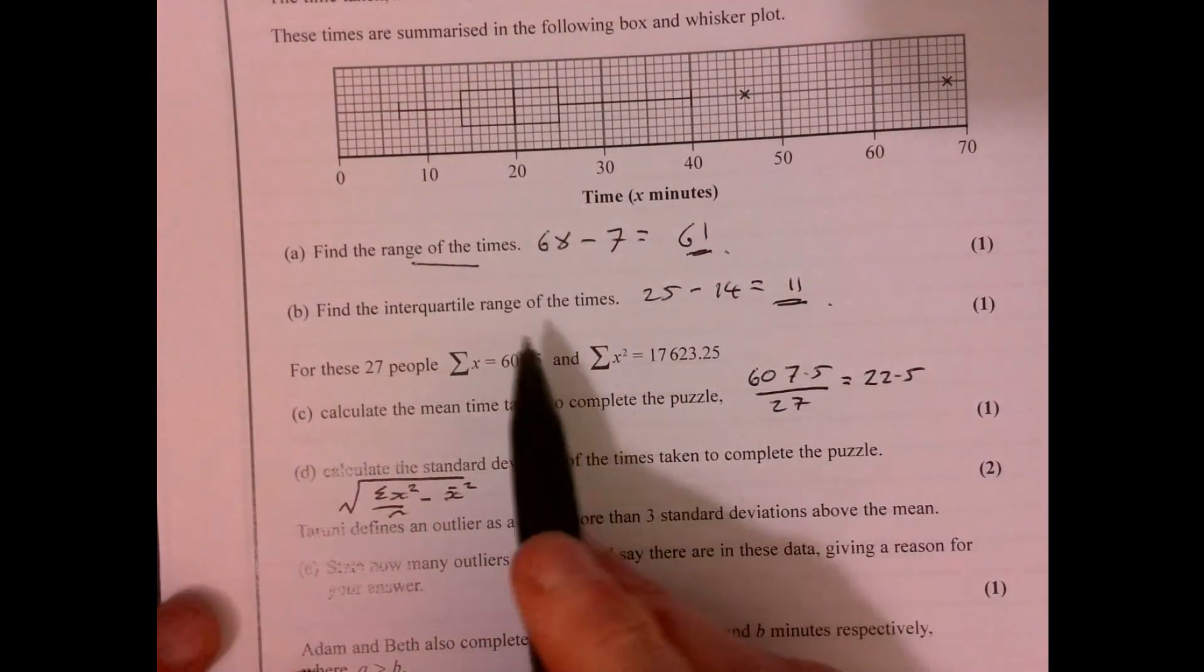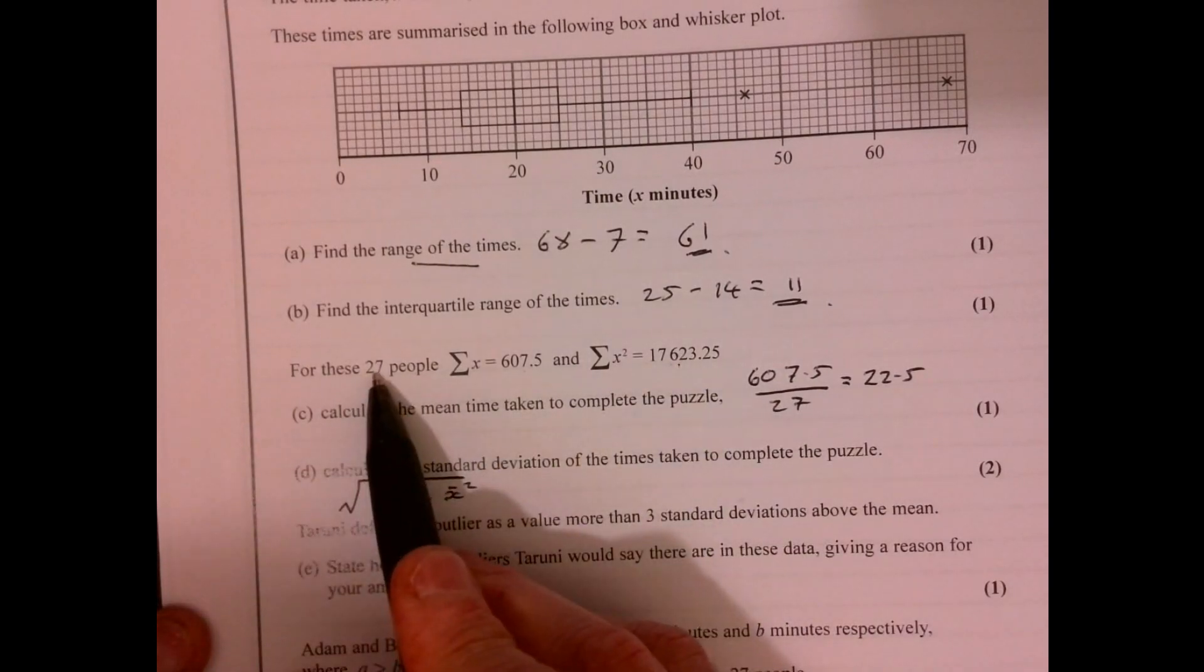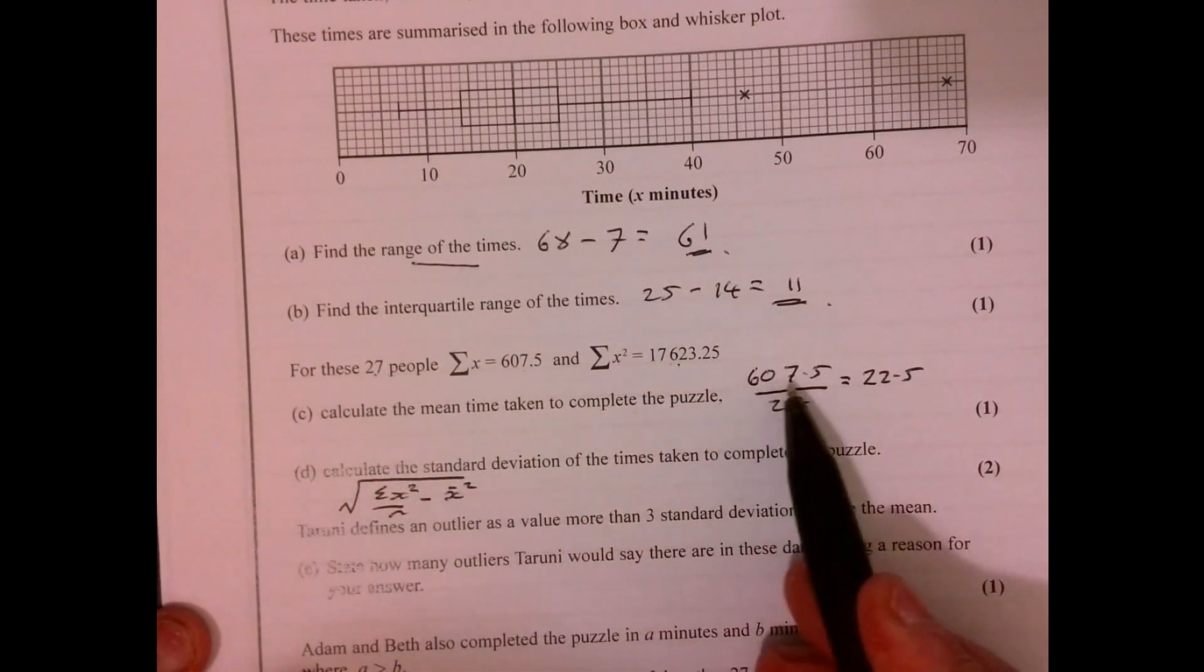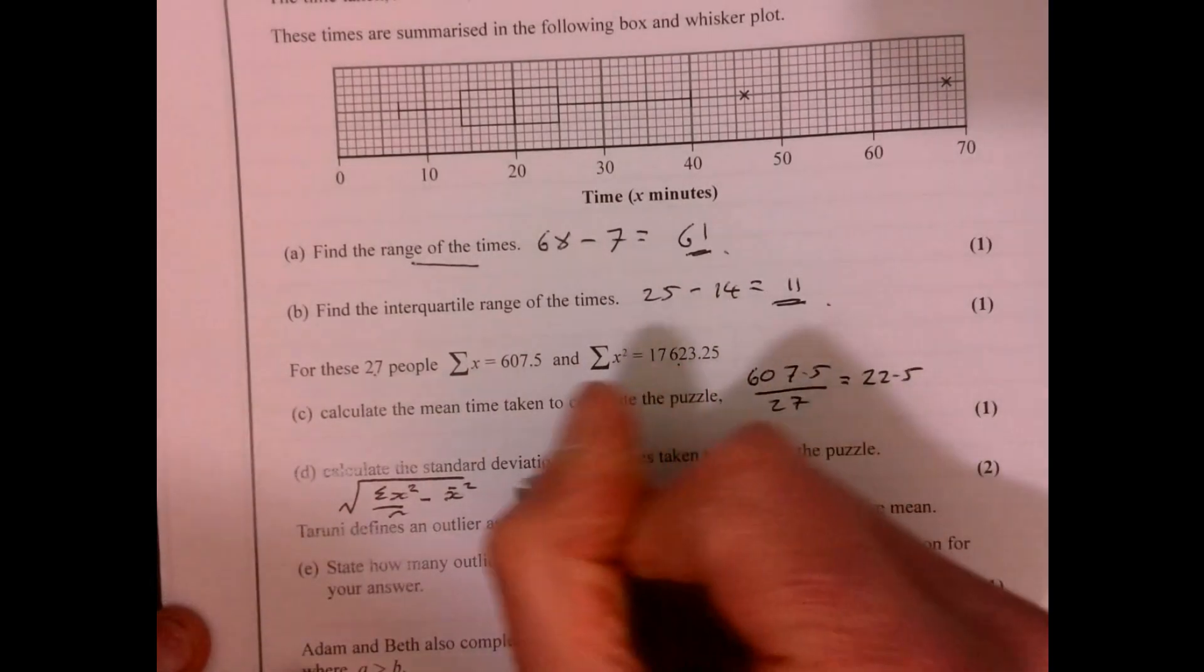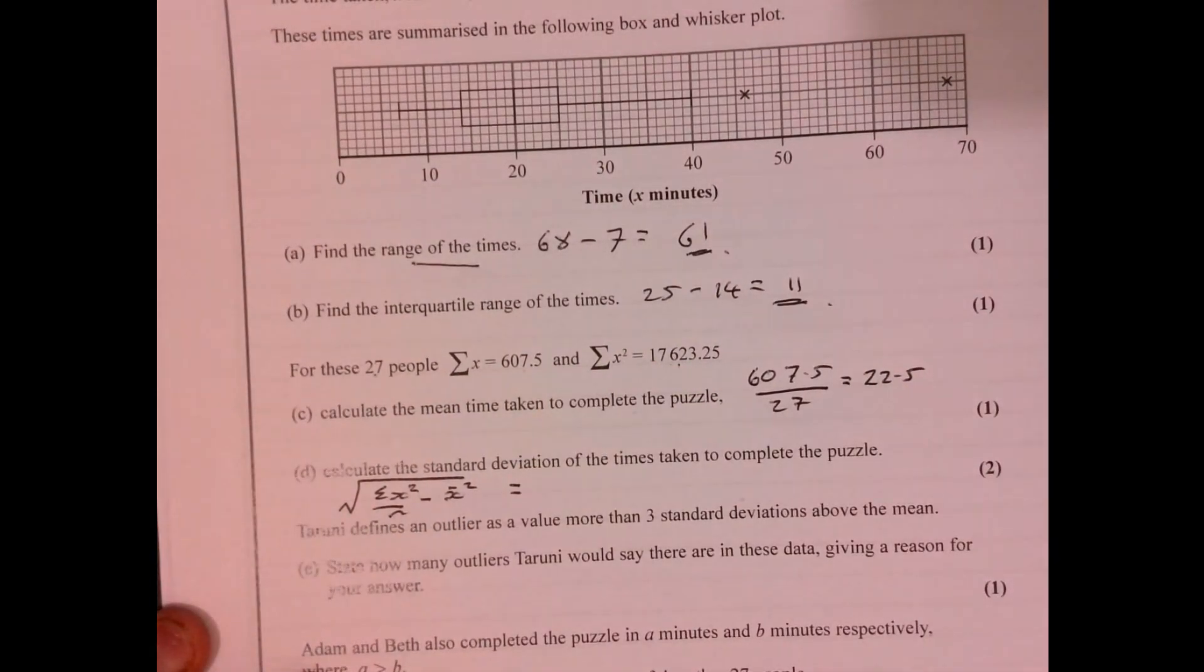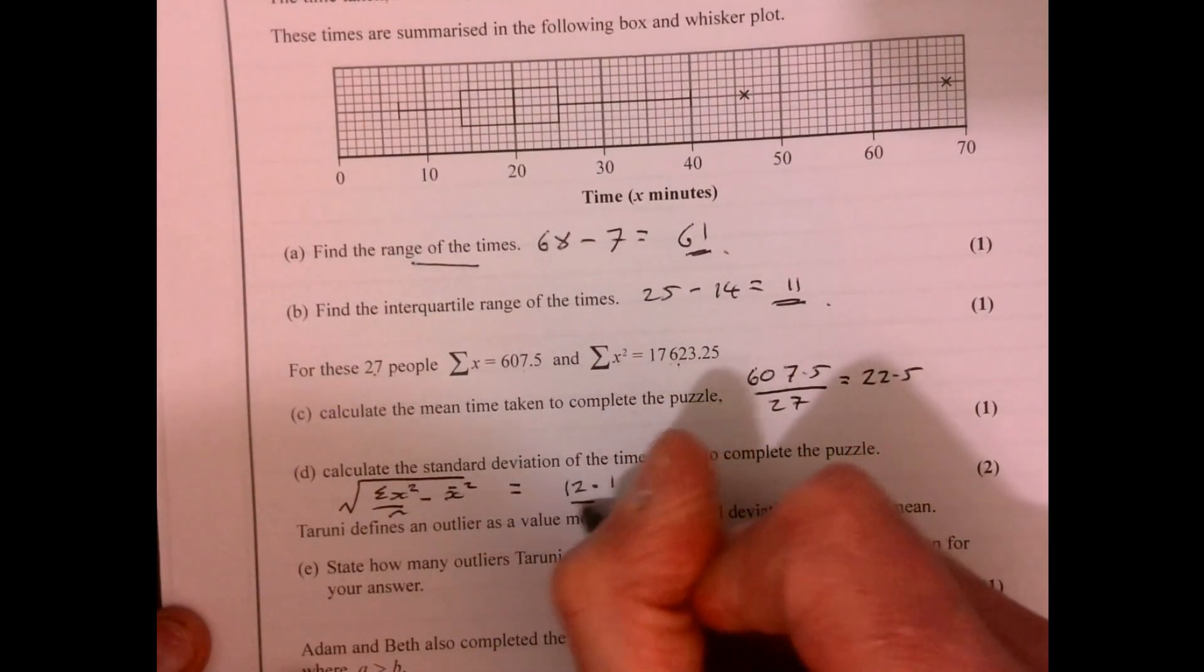So if you just feed in our numbers, we've got this, we've got n, we've just worked out this over here. Remember, it's that value squared. And if you do that, you end up getting 12.1.